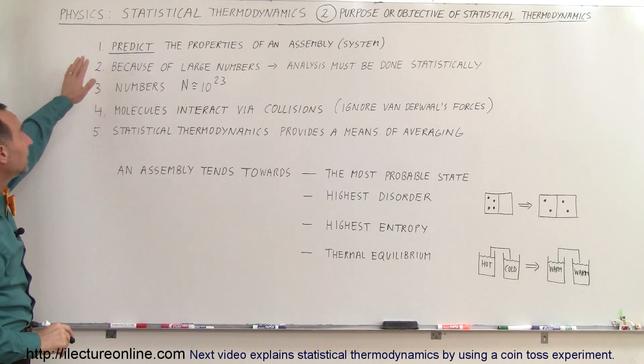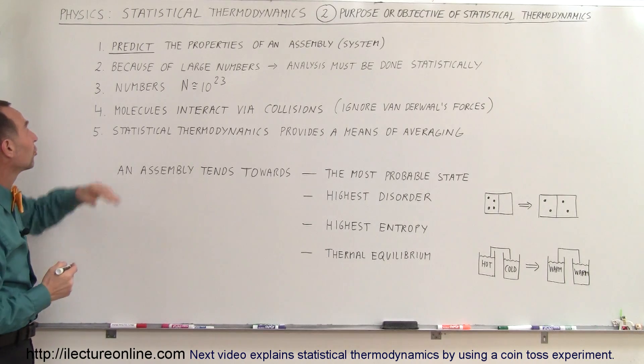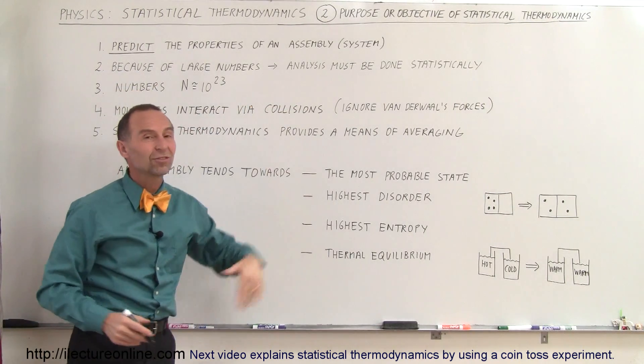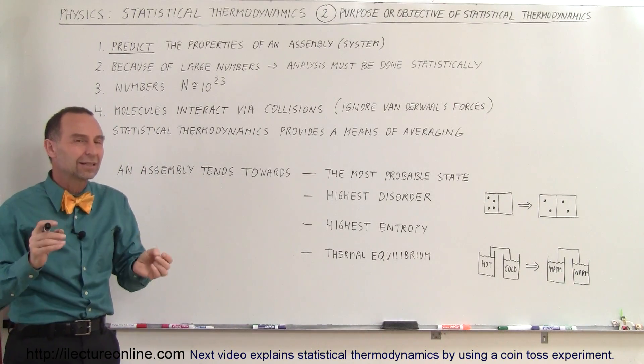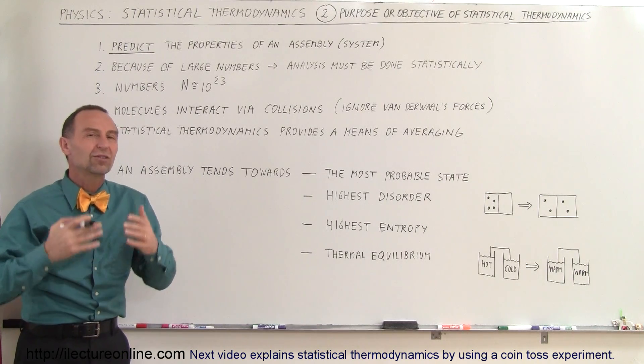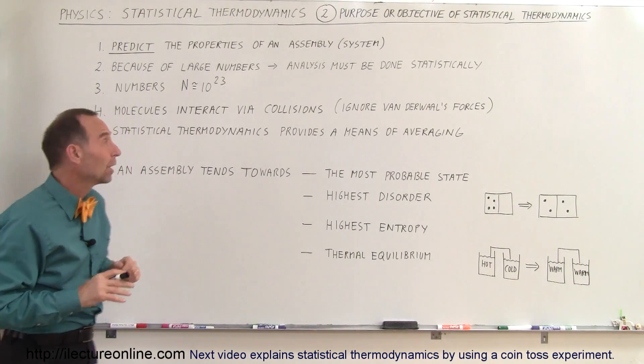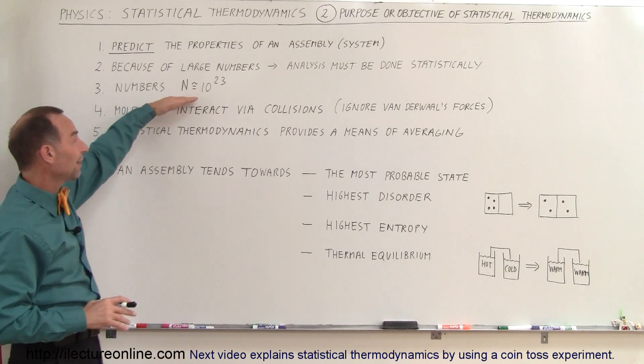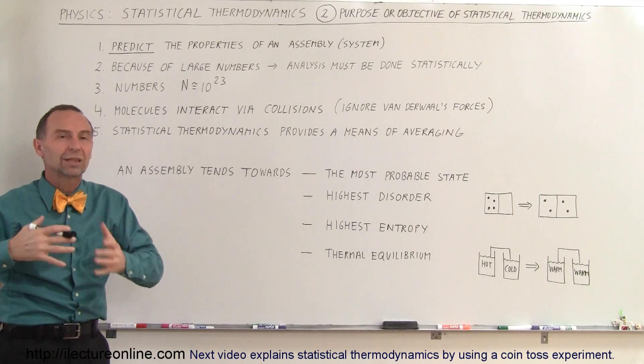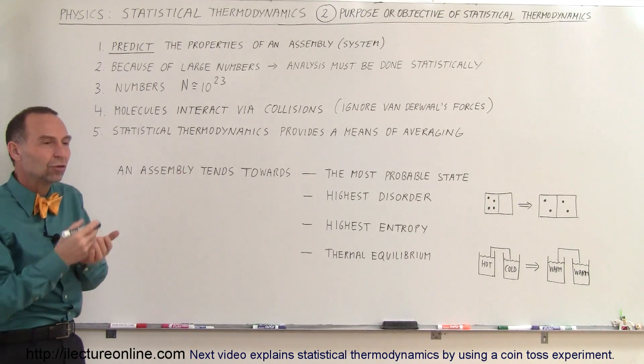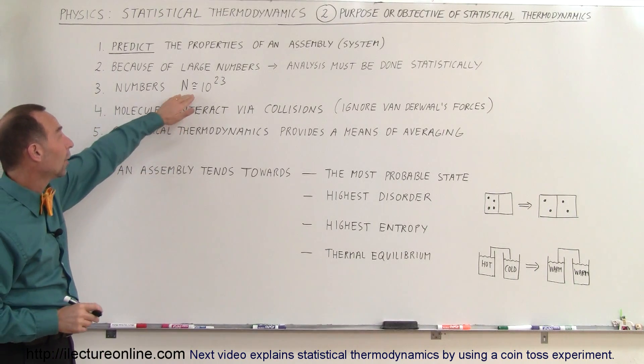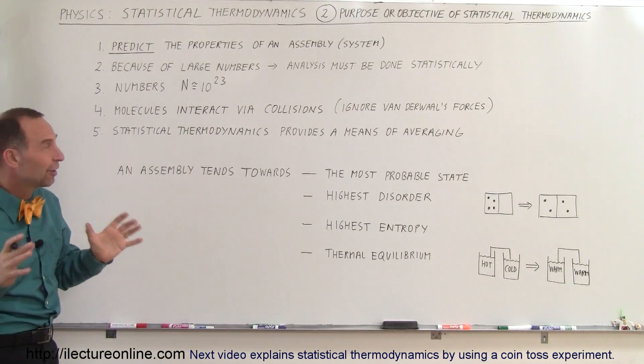We also need statistical thermodynamics, as I explained before, because we're usually dealing with very large numbers. The analysis must be done statistically. Again, we cannot just go and take each part and calculate it. We need to use statistical means to figure out what the states will be like. What is the probability of those states happening? We must keep in mind that the numbers typically are in the order of Avogadro's number. We deal with quantities of a mole, like a container with liquid, a container with gas. And so the number of elements in there, the number of atoms, the number of molecules, typically are in the order of Avogadro's number, very, very large quantities.